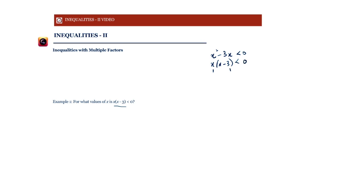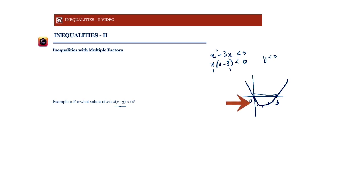The roots of this are zero and three, so the parabola will have those points on the x-axis. We want y to be less than zero, meaning we want the values of x for which y is less than zero. Those are the values where x lies between zero and three, because on the parabola those points lie below the axis. So the solution is zero less than x less than three.